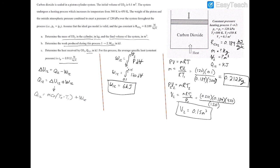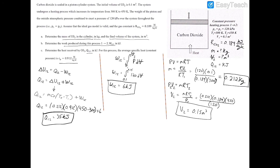Plugging in: Q12 equals 0.212 kilograms times 0.912 kilojoules per kilogram Kelvin times (450 − 300) Kelvin, plus 6 kilojoules net work. This gives a heat transfer from 1 to 2 equal to 35 kilojoules. Because it's a positive number, the heat is into the system.